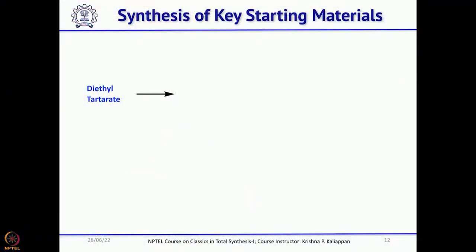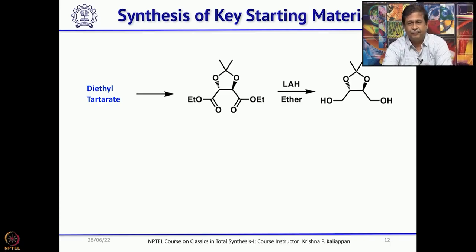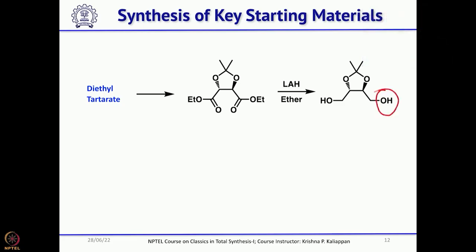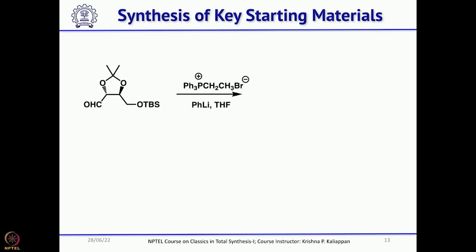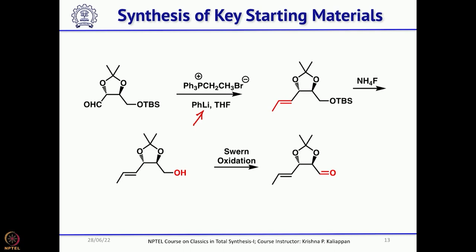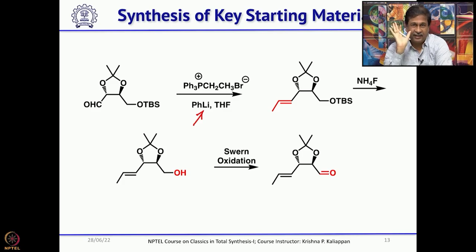Coming back to the total synthesis of FR900848: Barrett started with diethyltartrate as starting material for one fragment. The hydroxyl groups were protected as acetonide, then the esters were reduced to a diol, and one hydroxyl was protected as a TBS ether. The other primary alcohol was oxidized under Swern conditions to get the aldehyde. A Wittig reaction with an ethyl bromide-derived Wittig reagent followed by Manfred Schlosser's conditions using excess phenyllithium gave the trans (E) double bond. Removal of the TBS group and oxidation gave one fragment required for the total synthesis.